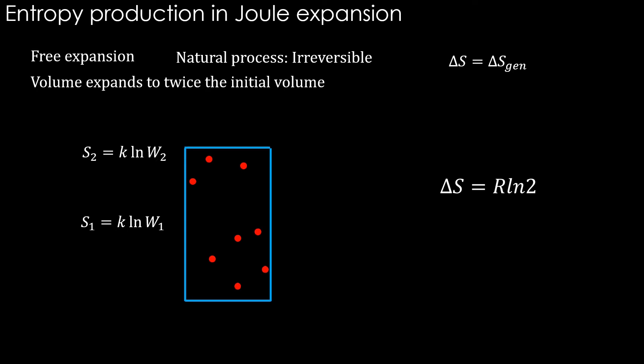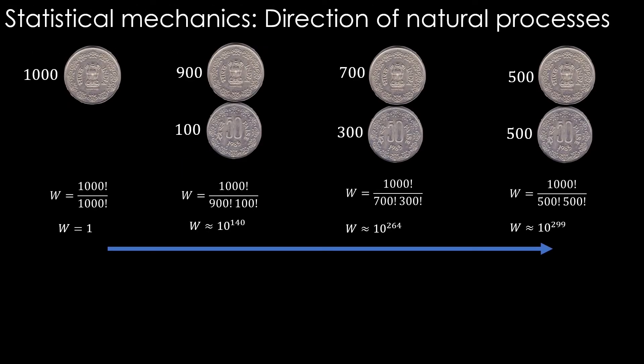We may have a separate video on this discretization. Here we will see a necessary glimpse of it. In the thousand coins example in the previous video we had a configuration such as 500 heads and 500 tails. It had microstates counting to 10 power 299.